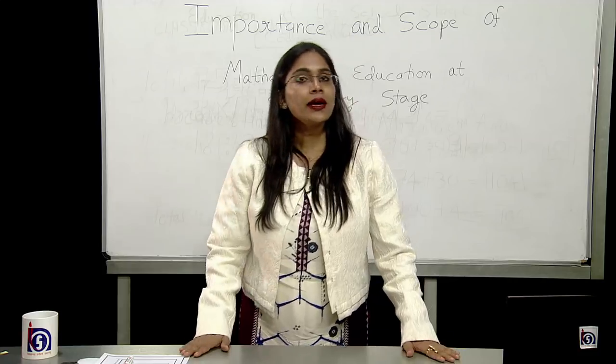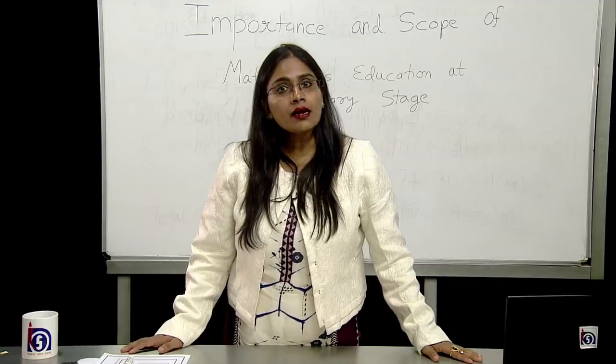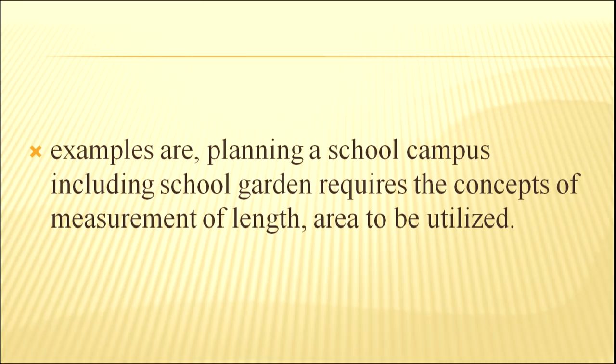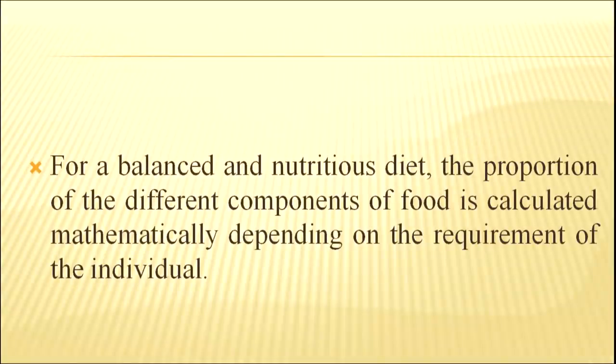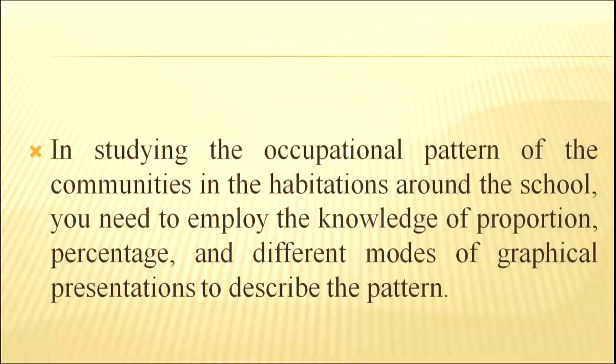Mathematics and environment study. In the curriculum of EVS at the primary grade, there are several topics which require quantitative description and analysis based on these quantitative data. Examples are planning a school campus including school garden requires the concept of measurement of length, area to be utilized. For a balanced and nutritious diet, the proportion of different components of food is calculated mathematically depending on the requirement of the individual. In studying the occupational pattern of the community in the habitations around the school, you need to employ the knowledge of proportion, percentage, and different modes of graphical presentation to describe the patterns.